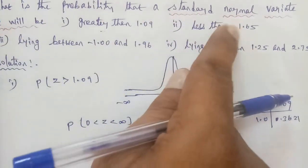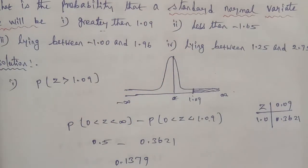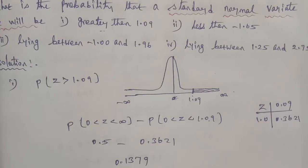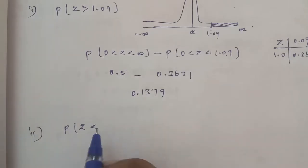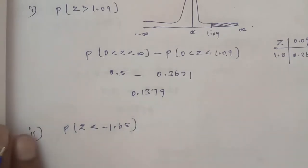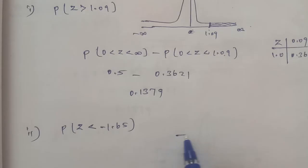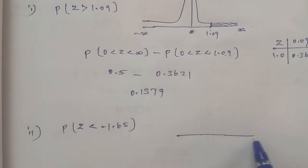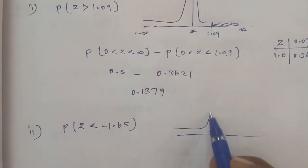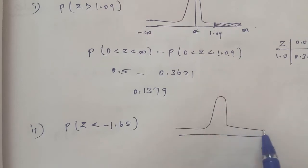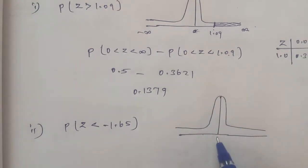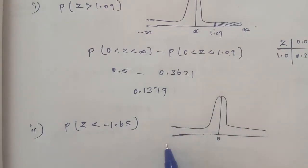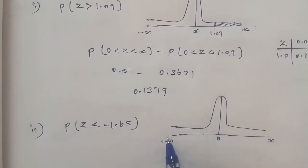For subdivision 2, Z will be less than minus 1.65. So we need the probability of Z less than minus 1.65. Again, draw the bell-shaped curve. The middle is 0, ranging from minus infinity to plus infinity. The area from 0 to infinity is 0.5, the area from 0 to minus infinity is 0.5, and the total area is 1.